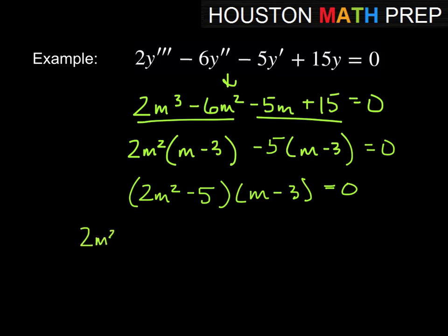And then we would solve each of these. So we'd have 2m square minus 5 equal to 0, and we'd also have m minus 3 equal to 0. This one over here on the right-hand side, not too bad. m is equal to 3. So that's one of our solutions there. On this left-hand side here, when we solve this, we'll get that m is equal to plus or minus the square root of 10 over 2.